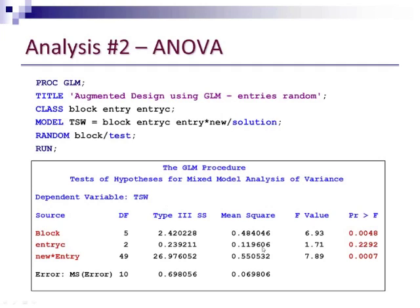And so then the output from that analysis is shown below here at the ANOVA. We can see here that we do have significant variation among our blocks. The checks actually were fairly comparable to each other, so there's not significant variation among the checks. But we see from the new times entry probability value here that that indicates that we have significant variation among our new entries.